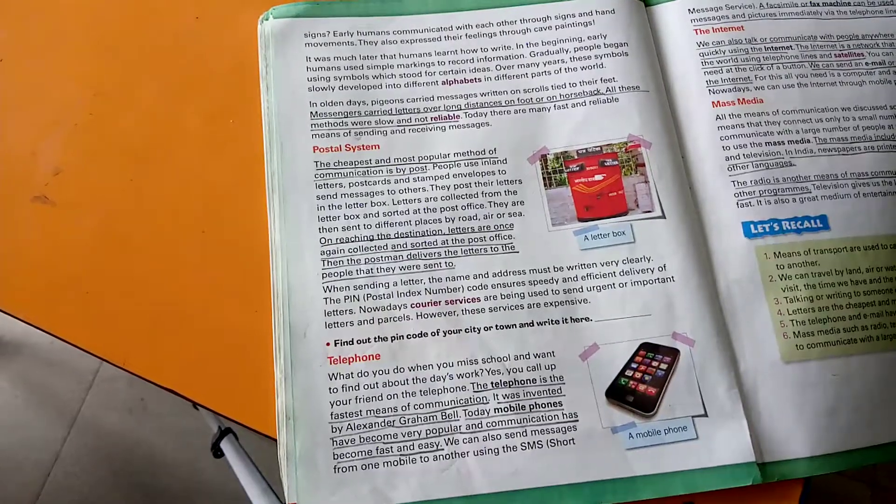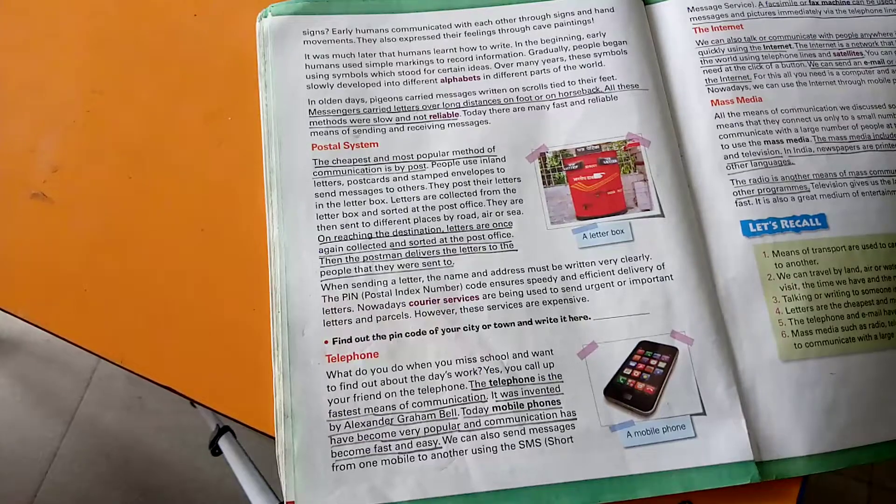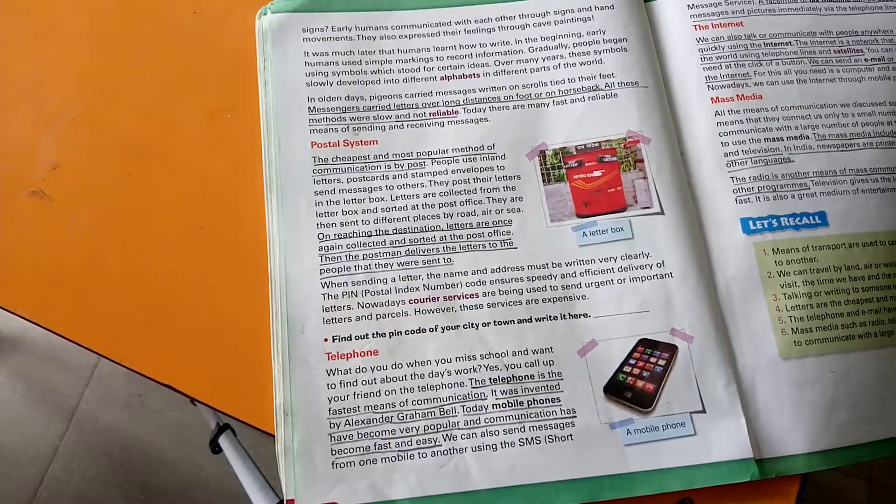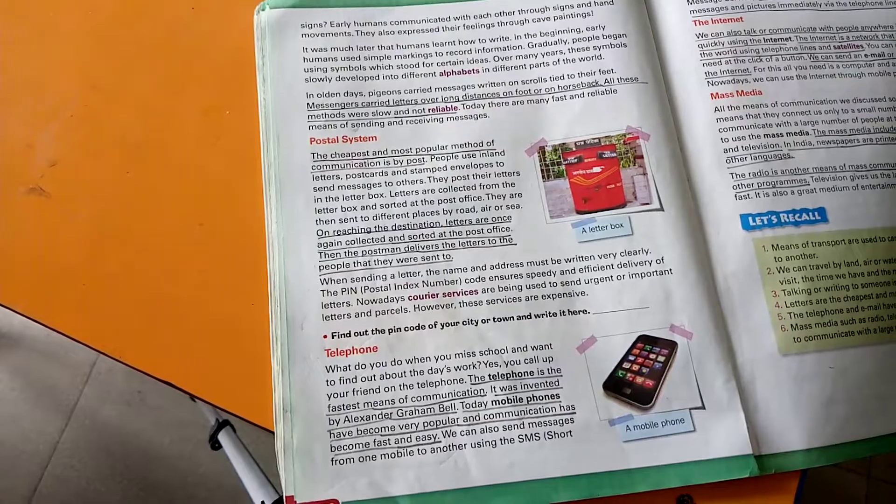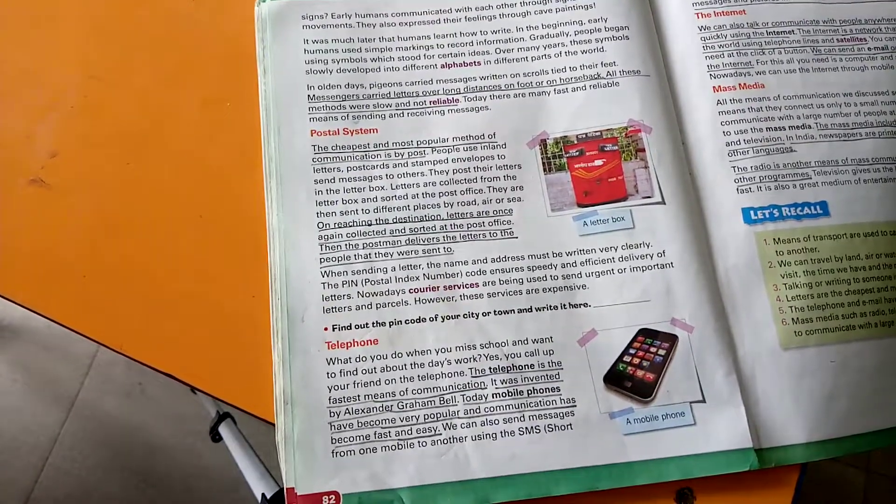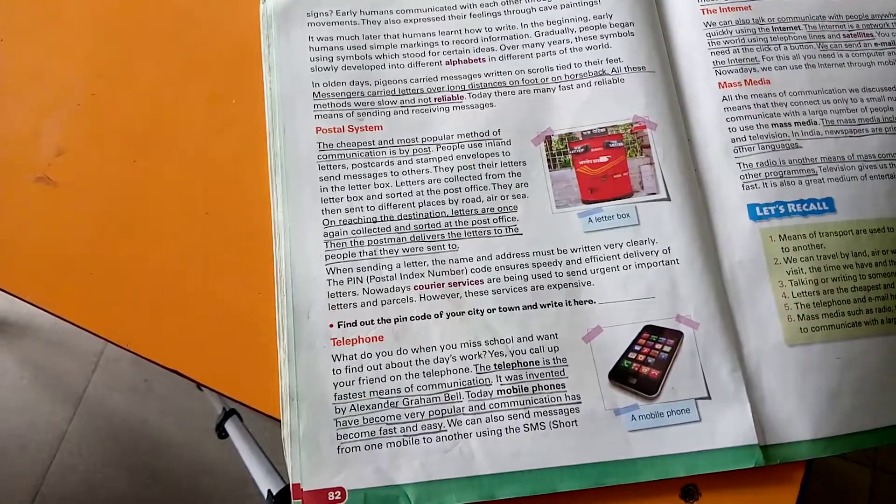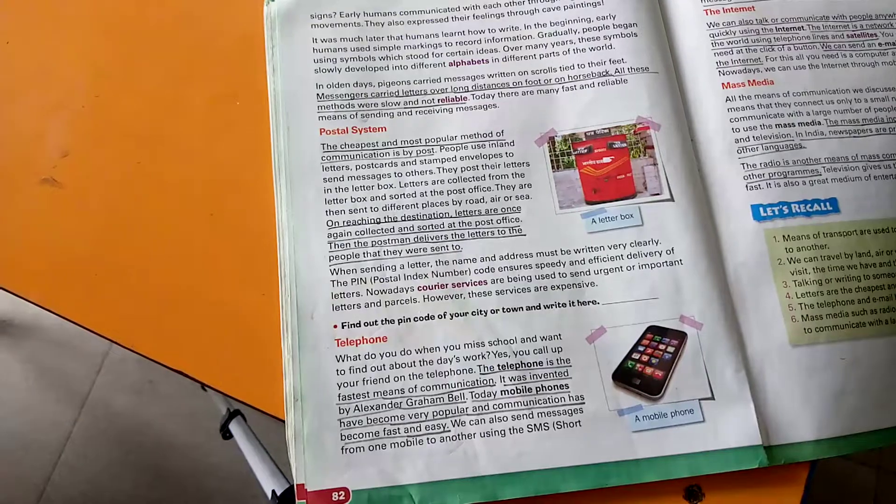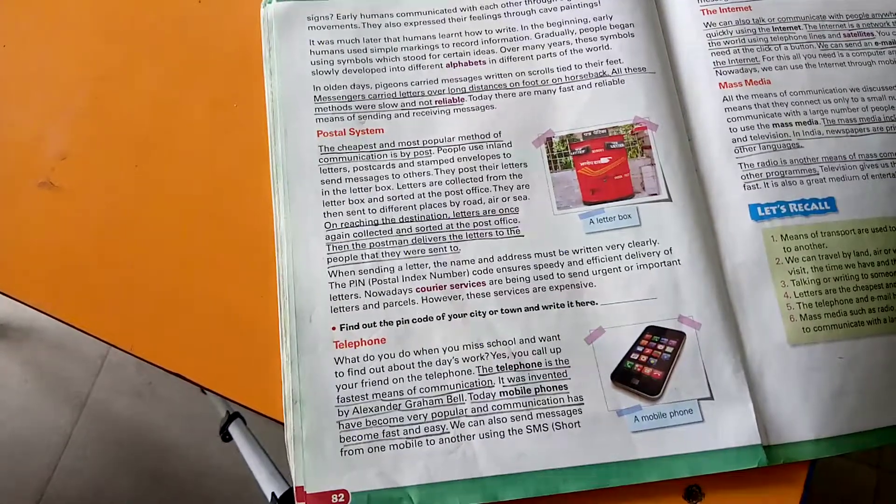In the beginning, early humans used simple markings to record information. Gradually, people began using symbols which stood for certain ideas. Over many years, these symbols slowly developed into different alphabets in different parts of the world.